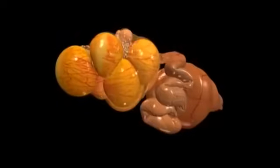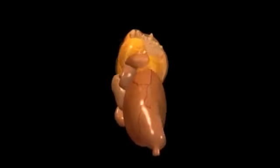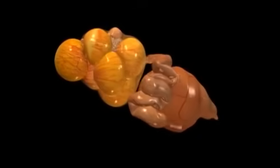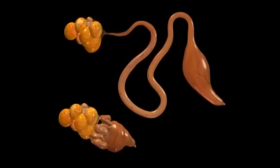The ovary and the oviduct occupy a surprisingly small space within the body of the hen, only a few cubic inches. But when the oviduct is stretched out, it's nearly two feet long, and has five distinct sections.